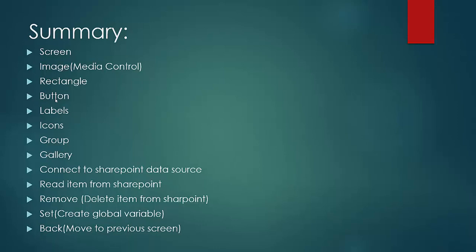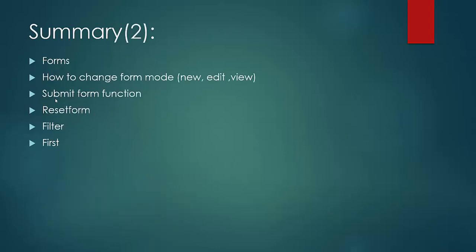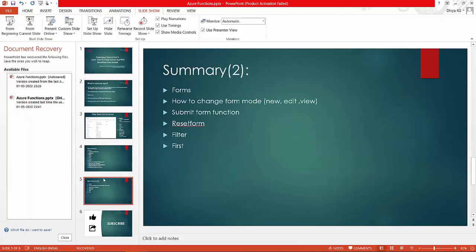We saw the Back function to move to various screens, and the Navigate function to move from one screen to another in the canvas app. We covered forms - by default we have New Form, Edit Form, and View Form - and how to change the form mode. We saw how to submit a form using a custom button with the SubmitForm function, the ResetForm function, how to filter results from the database, and the use of the First operator. Now, before starting with the admin functionality, I will also add the Navigate function to the recap list.